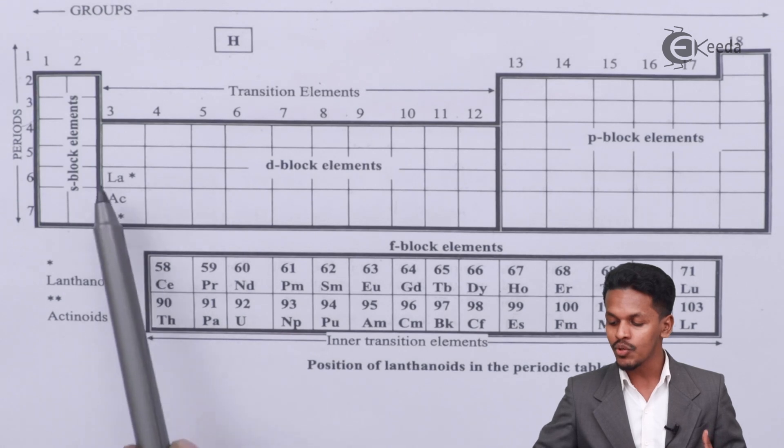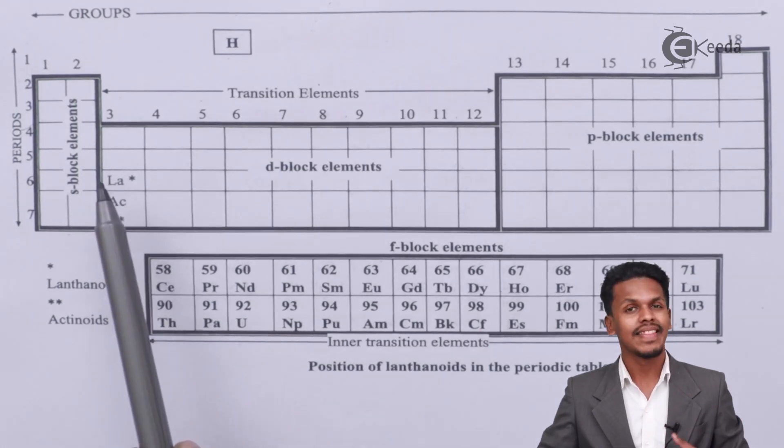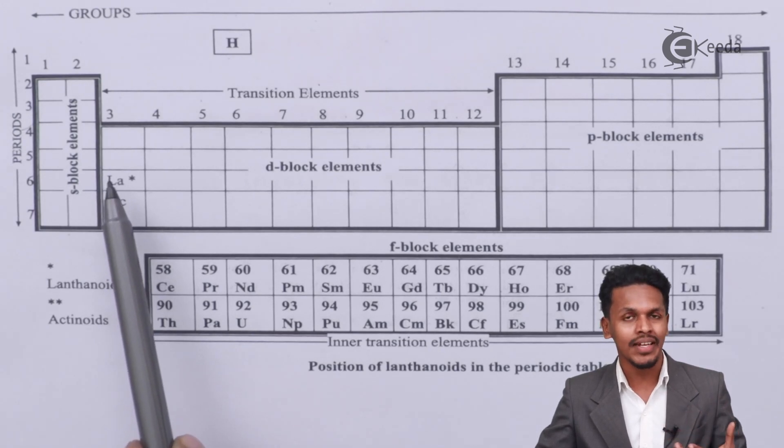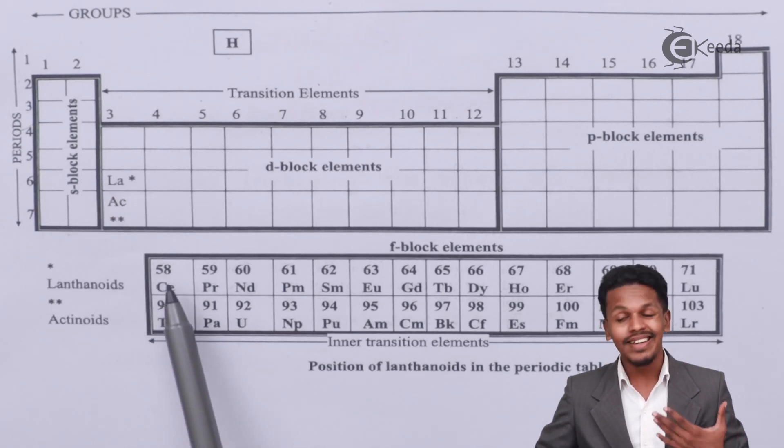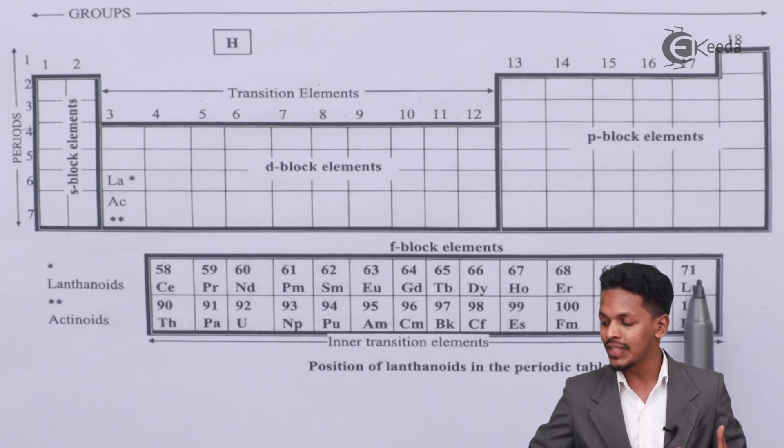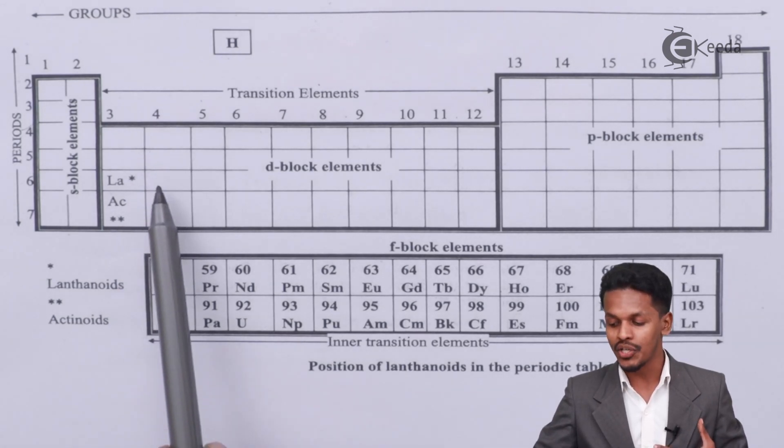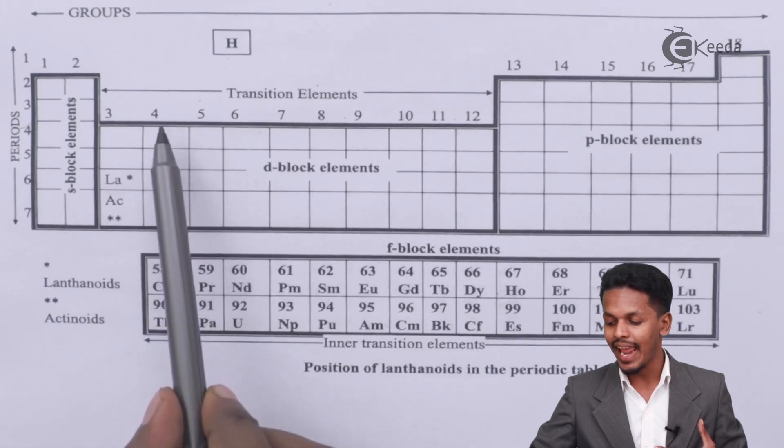So in this case if we talk about lanthanum, lanthanum has an atomic number of 57. So after that it's cerium which has an atomic number of 58 and then it ends with lutetium which ends with an atomic number of 71. And after that hafnium is basically present in this position where it is belonging to the sixth period and the fourth group.